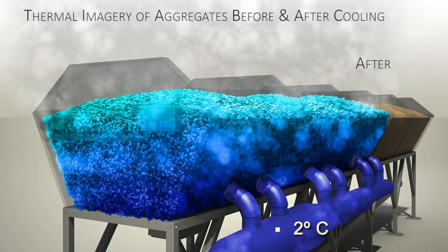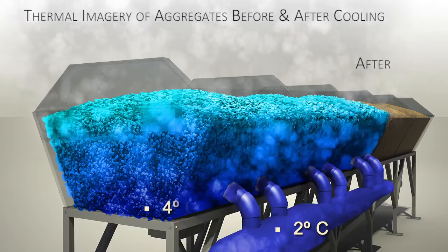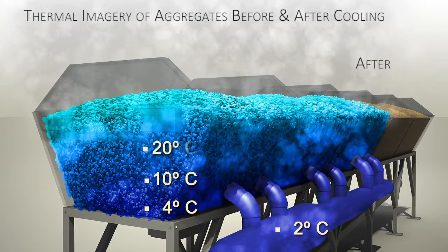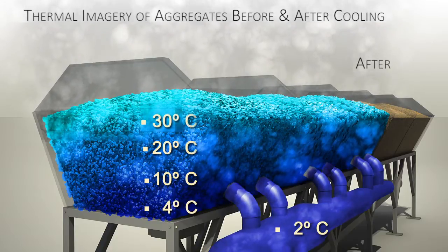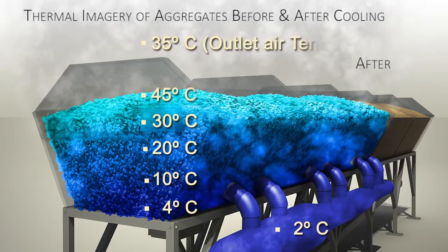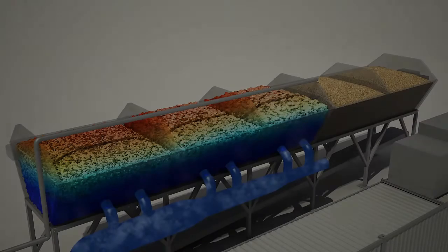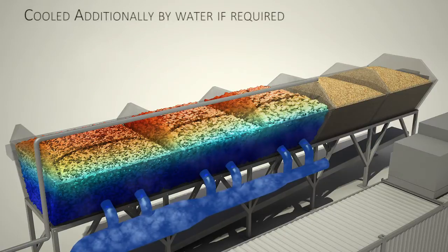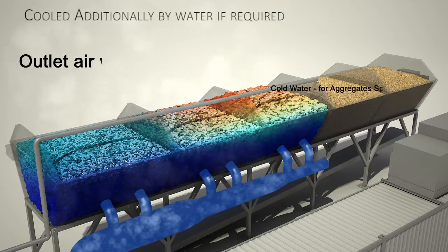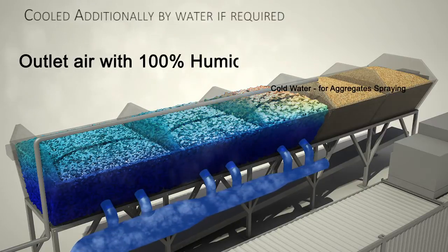Aggregate temperatures can be lowered up to 30 degrees Celsius. Temperature of cooled aggregates before addition to mixer can be up to 5 degrees Celsius. Further efficiency can be achieved by sprinkling cold water on the surface specifically to induce evaporation, resulting in efficient lowering of aggregate temperature.